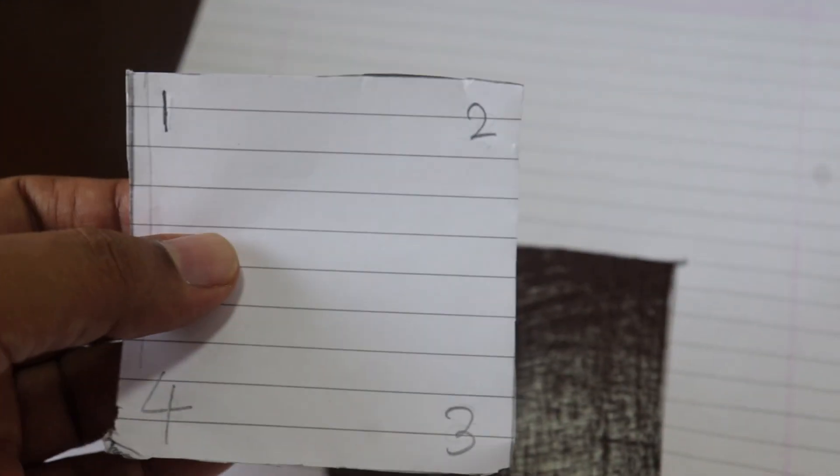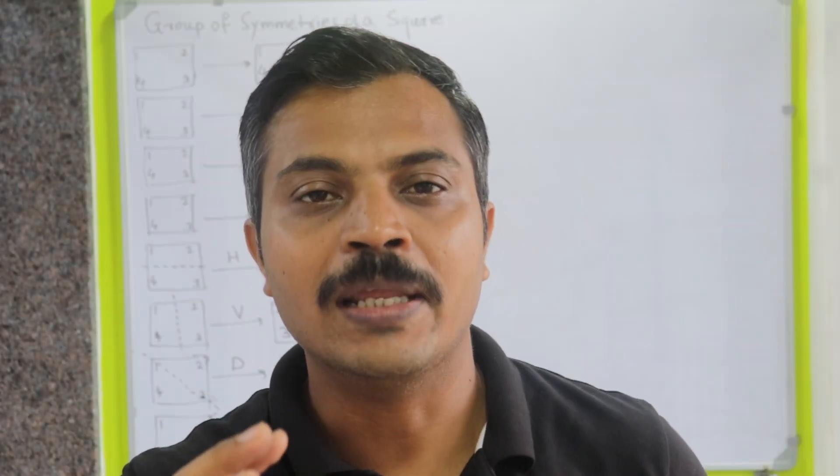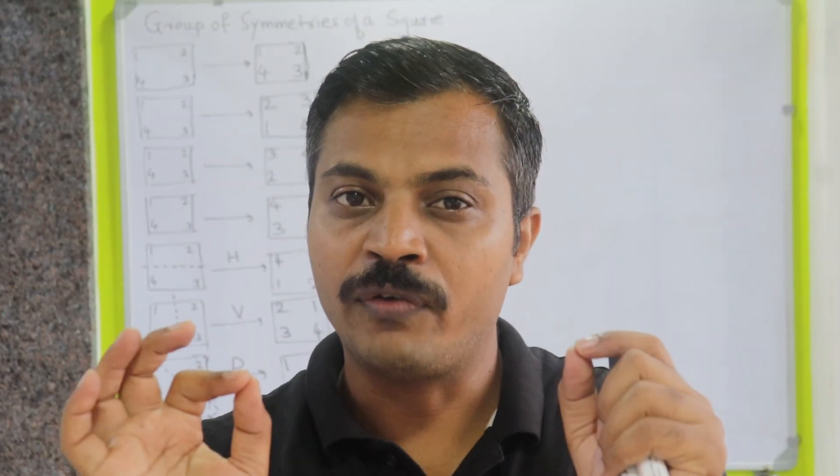Once you have given the labels in clockwise direction as 1, 2, 3, 4 on the front, after you remove the square from the paper, on the back side write the same labels again. Then, to find the symmetries, try to put that square back into its original position and look for the number of ways you can do it.